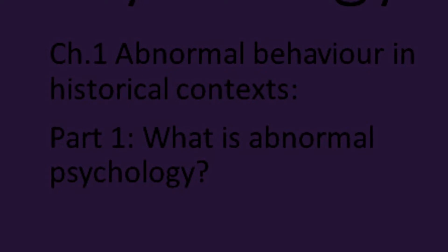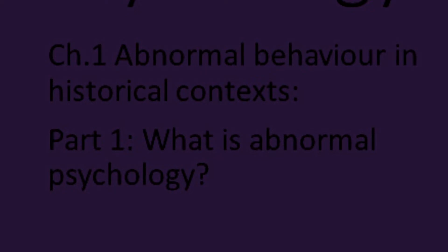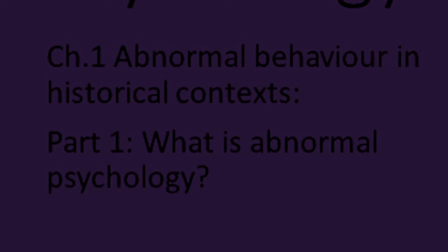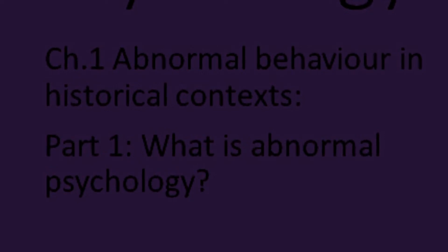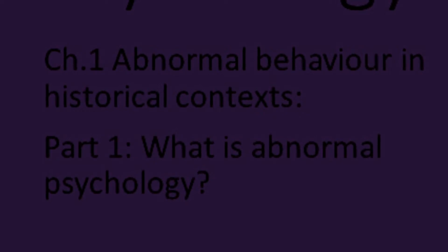This is the first part of the first chapter. In this video, I will define the key terms in Abnormal Psychology as stated in Chapter 1, known as Abnormal Behaviour in Historical Contexts. In the second video, I will review the history — the actual nitty-gritty of Abnormal Behaviours in Historical Contexts. The next video will be the second part of the first chapter.